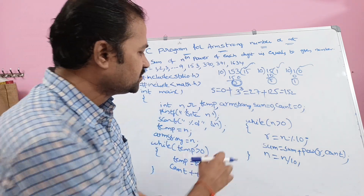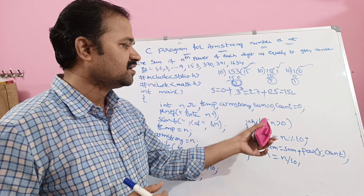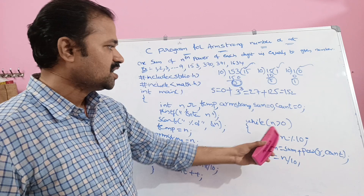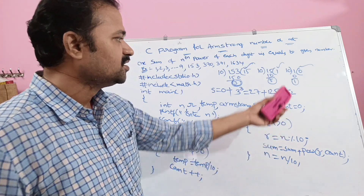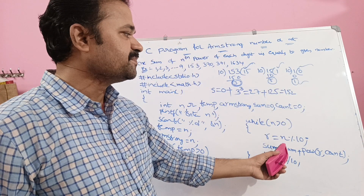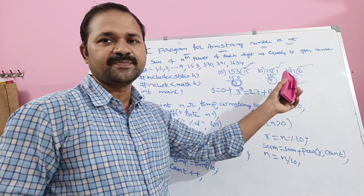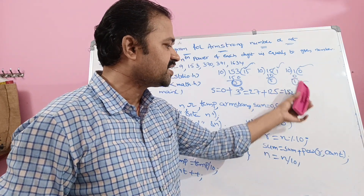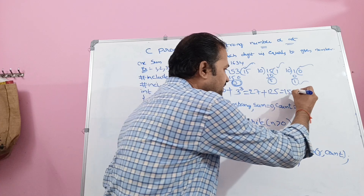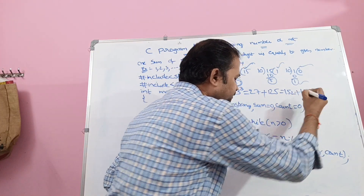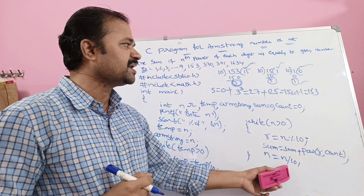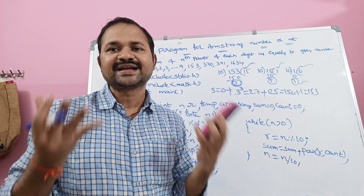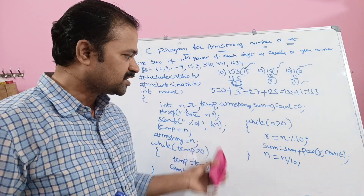Third iteration: n is 1, which is greater than 0, so condition is true. r is equal to 1 modulo 10, which is 1. Sum is equal to 152 plus pow(1, 3). 1 power 3 is 1, so 152 plus 1 equals 153. Next, n is equal to 1 divided by 10, which gives 0. So the condition 0 greater than 0 is false and control comes out of the loop.